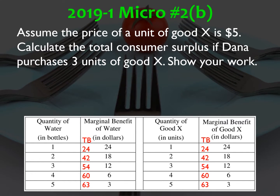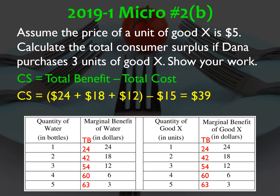Part B: assume the price of a unit of good X is $5. Calculate the total consumer surplus if Dana purchases three units of good X. Consumer surplus is the total benefit Dana receives minus the total amount she pays. The total benefit is 24 plus 18 plus 12, so $54 for three units of good X. Since each unit costs $5, it's 54 minus 15, or $39 as the consumer surplus.